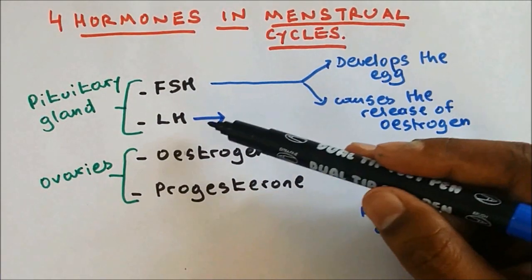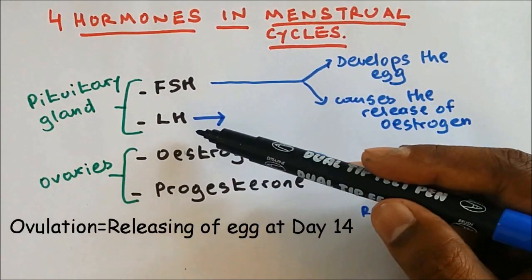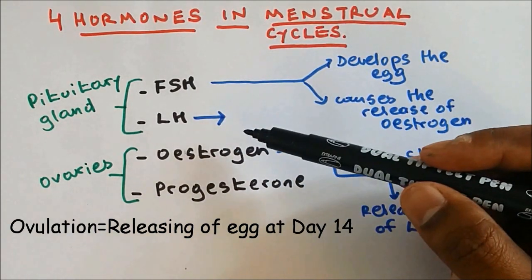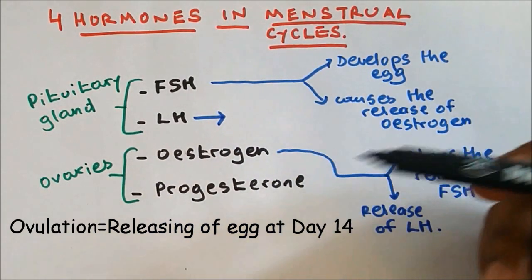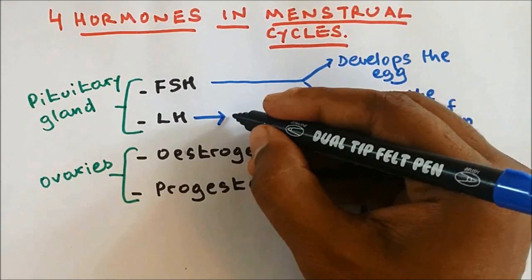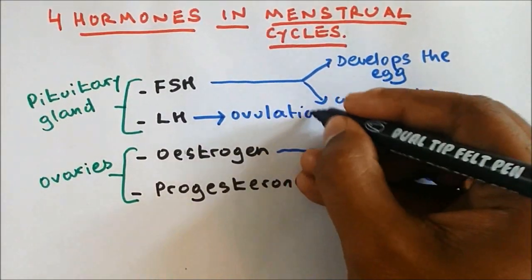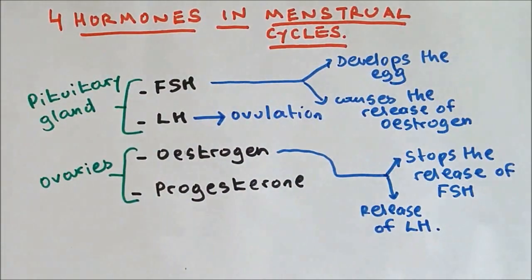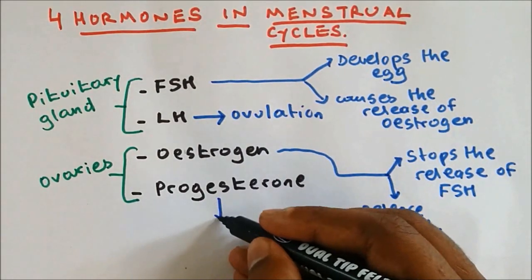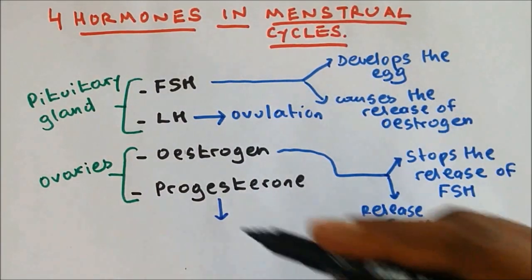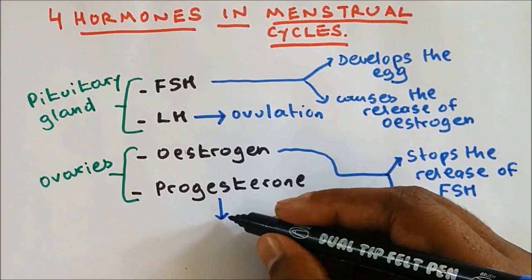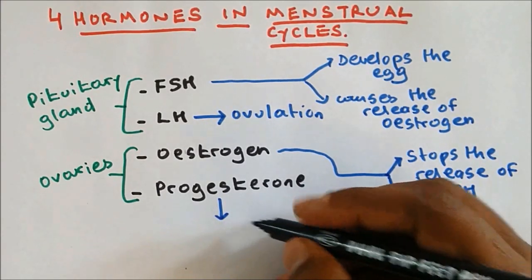Luteinizing Hormone causes the release of the egg from the ovaries at day 14, and this process is called ovulation — so LH causes ovulation. Once the egg has been released, Progesterone maintains the lining of the uterus.